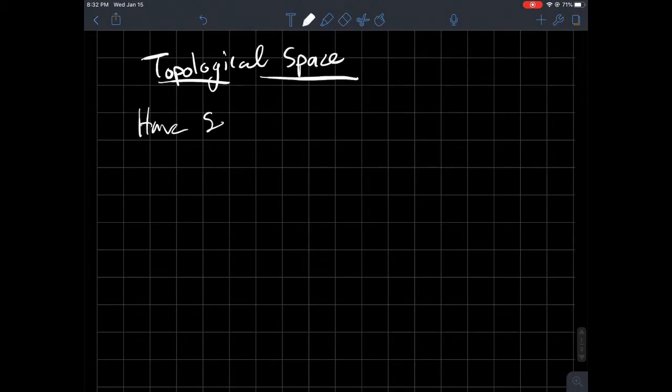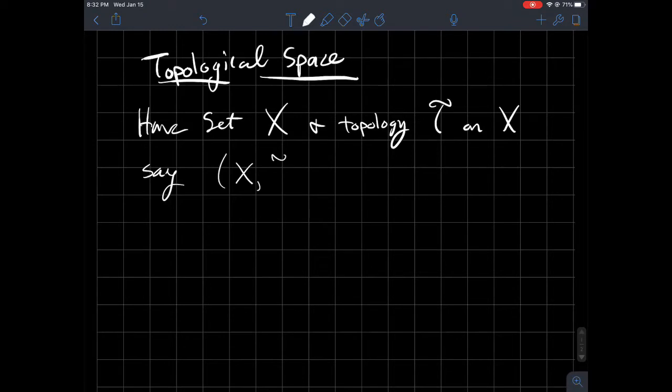You have a set X, and you have a topology T. I'll use a fancy T. Fancy T on X. Then we say X, we'll write it as like a pair, XT is a topological space. That's really it. Topological space. Great.